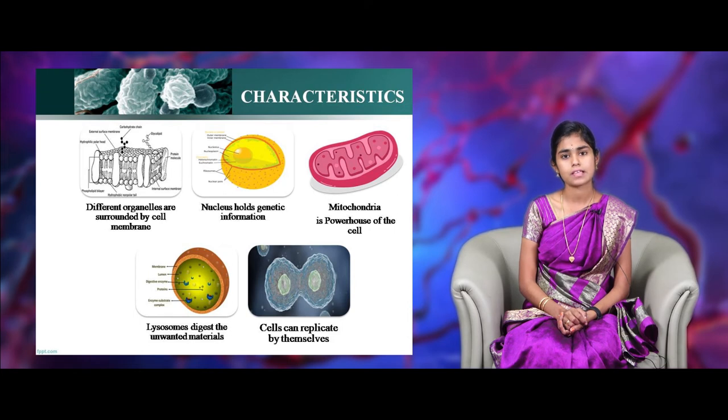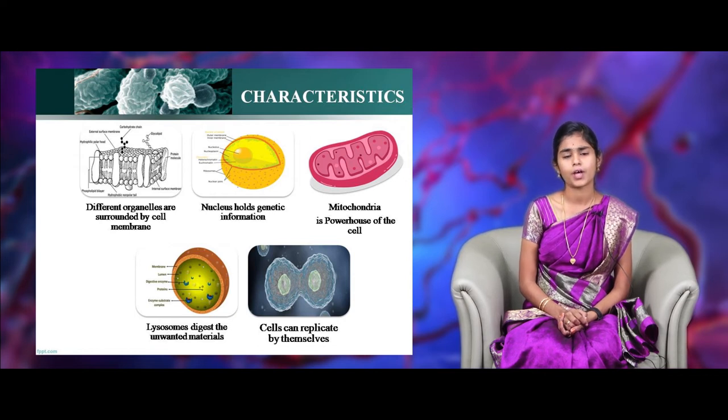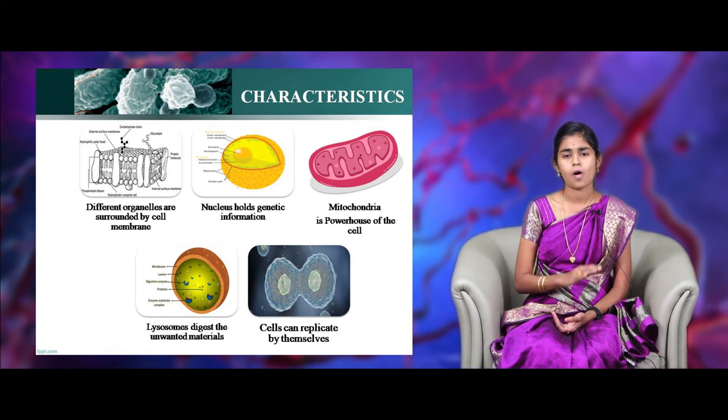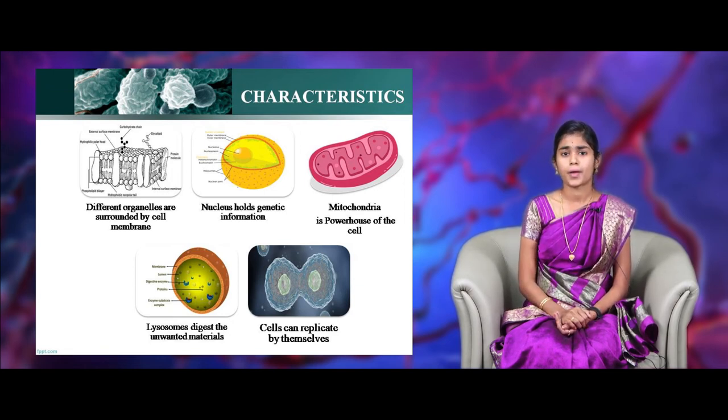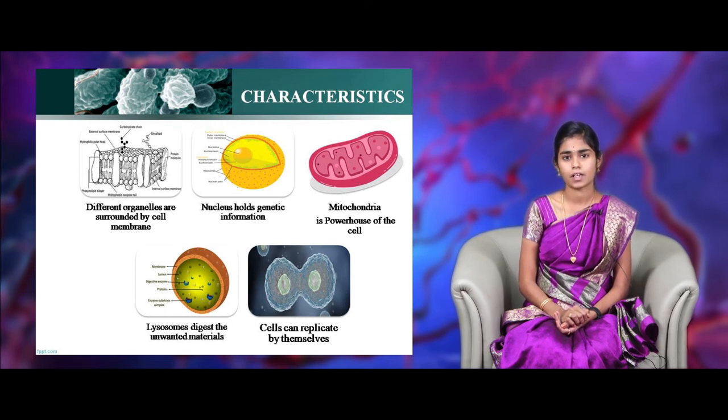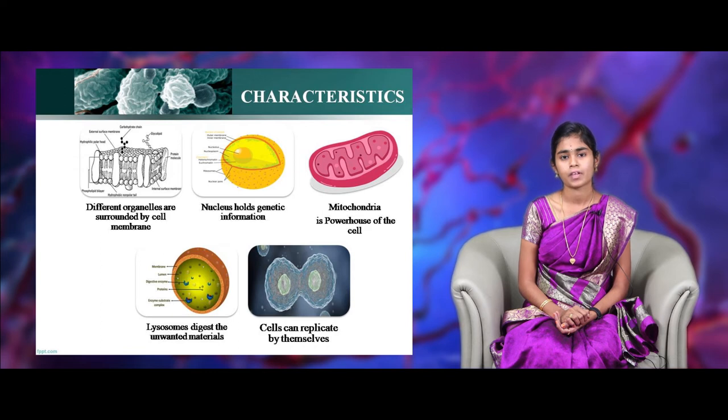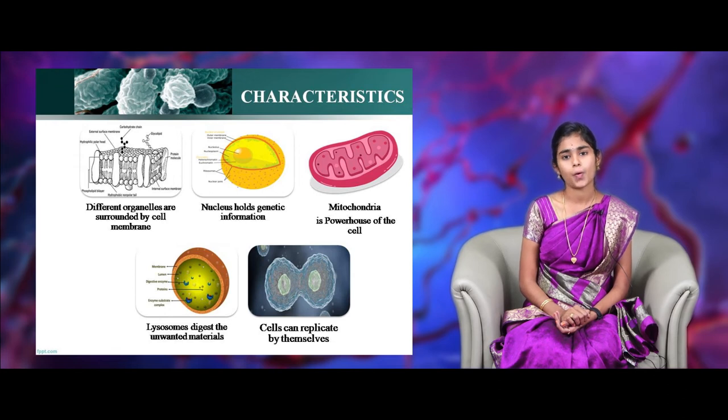It comes to the characteristics of cells. The characteristics of cells are very significant. It mainly concentrating on nucleus, cell membrane, mitochondria, lysosome and cell replication process. First, cell membrane covers all the cell organelles and nucleus carries the genetic information which transfers from parents to offsprings. You know, mitochondria is the powerhouse of the cell which provides energy to the whole body. And then, cell replication is the process of multiplication to produce their own copies. And finally, lysosomes.